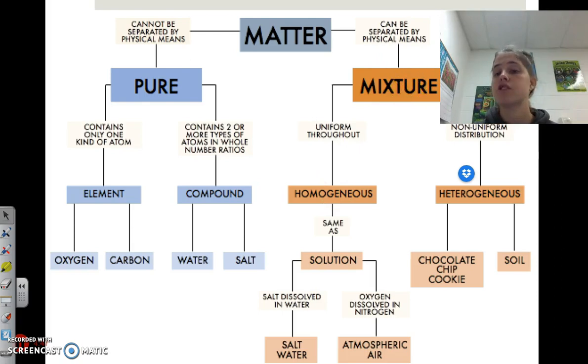Now, if that mixture is not uniform, meaning you can tell where one thing begins and the other thing ends, it is a heterogeneous mixture. And examples of that would be like chocolate chip cookies and soil.